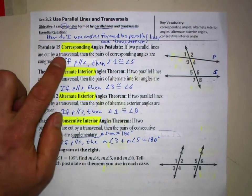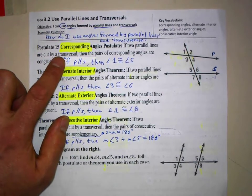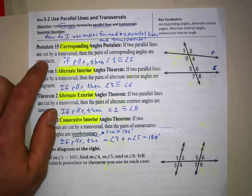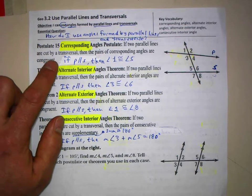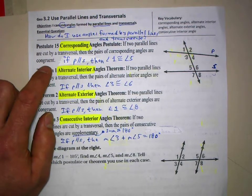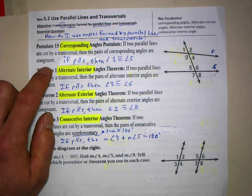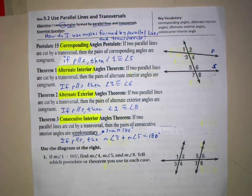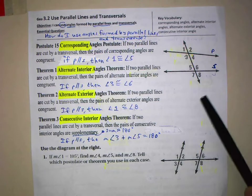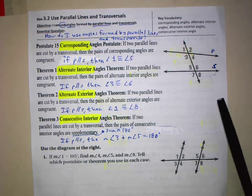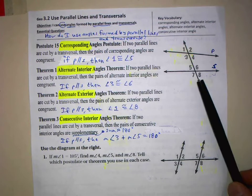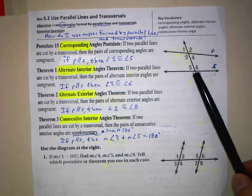Corresponding Angles Postulate: if two parallel lines are cut by a transversal, then the pairs of corresponding angles are congruent. When we look at this diagram, the first thing I want to do is identify which is the transversal — here's the transversal that cuts across these two lines at two separate places.